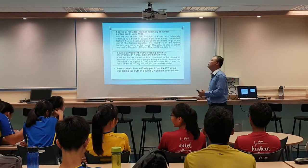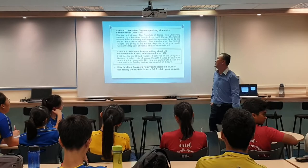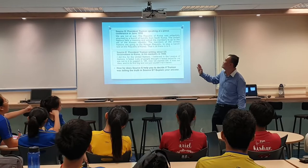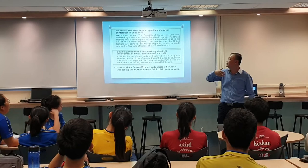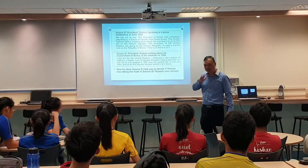Now let's move on to this one — a more interesting source related to the Korean War, something that is likely to appear for all of you. In 1950, President Truman speaks at a press conference saying 'we are not at war.' The Republic of Korea was attacked by North Korea. The United Nations held a meeting, and after that they said the UN is going to help Korea — we are going to chase off the bandit raid. That means North Korean troops are like bandits trying to take over Korea — and that is all there is to it.